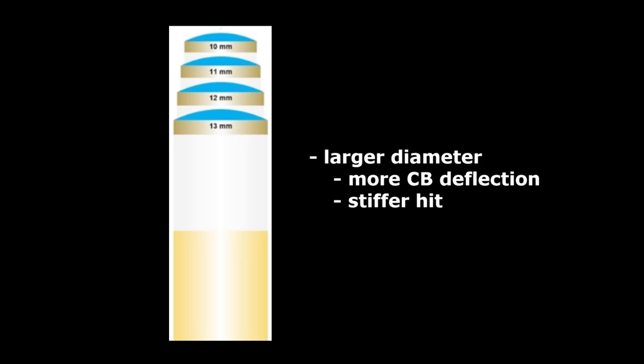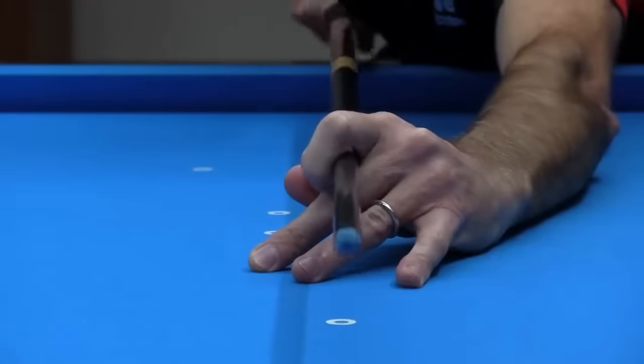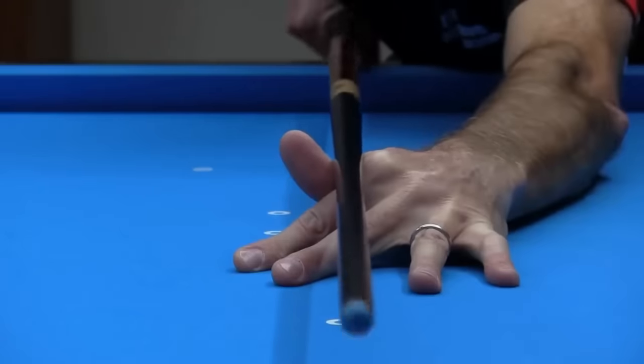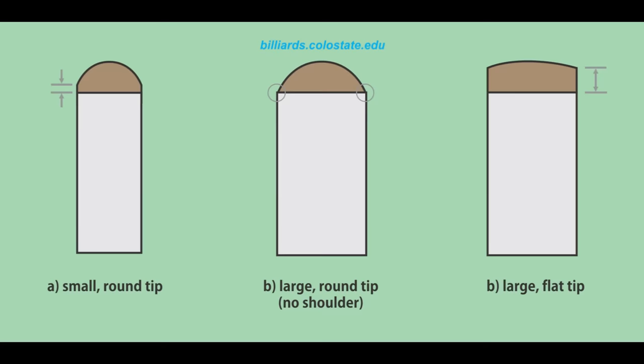These things are mostly a matter of personal preference. For more information see the links in the description or pinned comment below. If you use a closed bridge you might have a shaft diameter preference, but it really makes no difference with an open bridge. One factor related to both tip size and shape is the shoulder height.